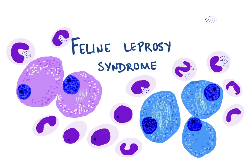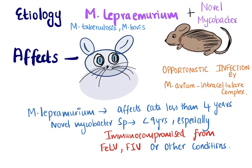Hello everyone, welcome back to my channel. Today let's learn and discuss about feline leprosy syndrome. Feline leprosy syndrome is a bacterial infection, and the bacteria that causes it is mycobacterium species. There are different types of mycobacterium that can cause this infection — most commonly Mycobacterium lepraemurium, Mycobacterium tuberculosis, and Mycobacterium avium. Mycobacterium is an acid-fast bacilli that likes to be inside the cell. Comparing to all other animals, cats have been documented to get this infection more commonly than dogs or other animals.